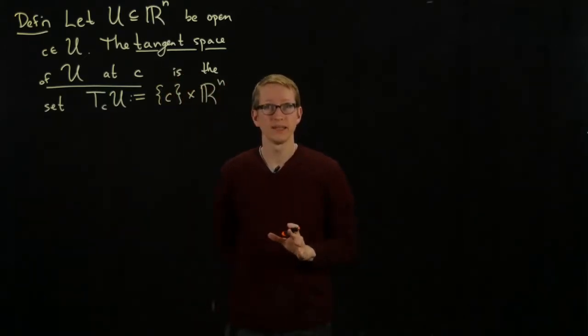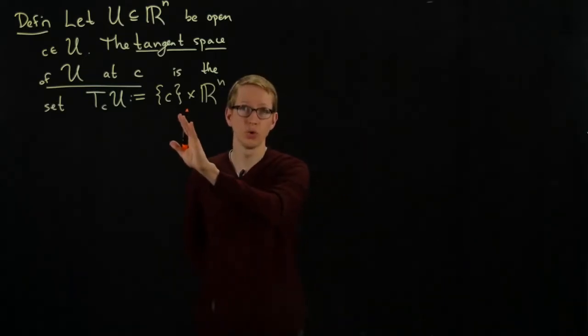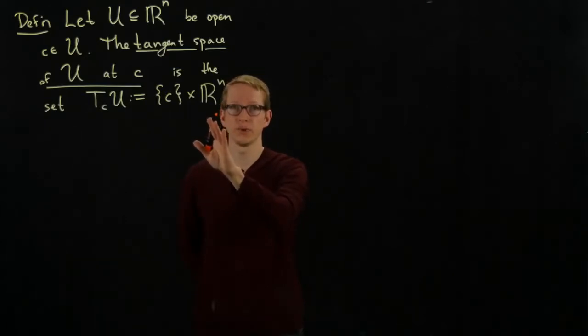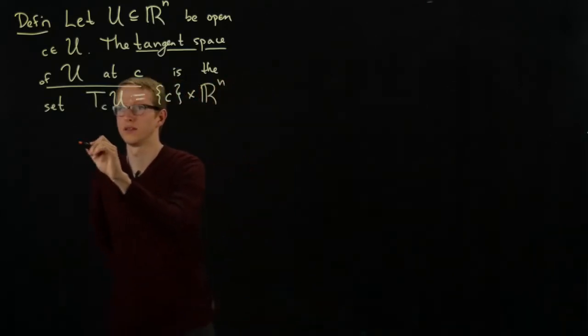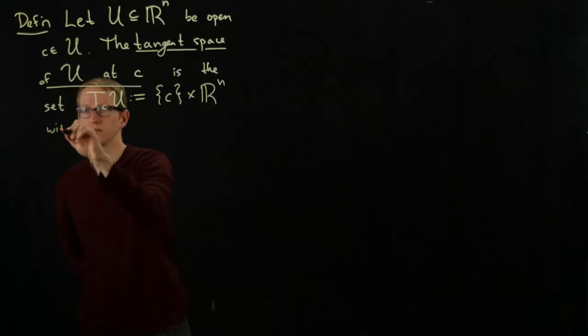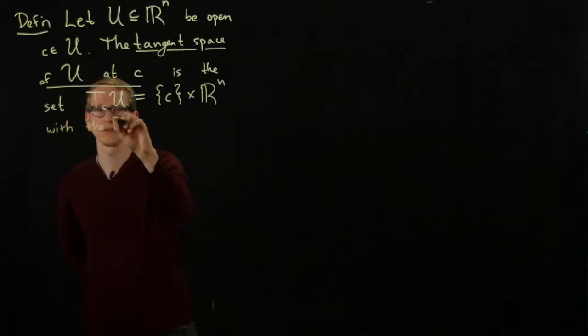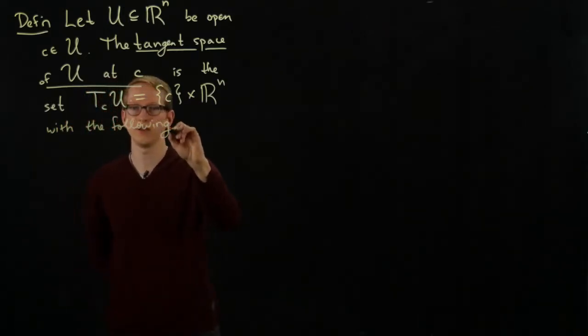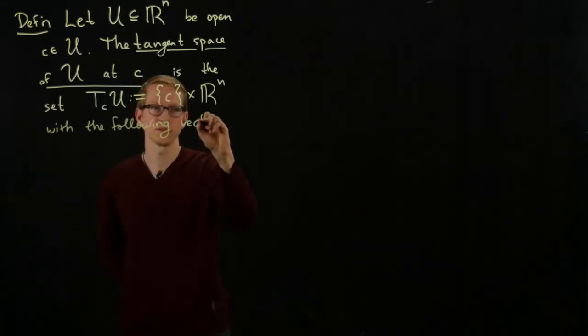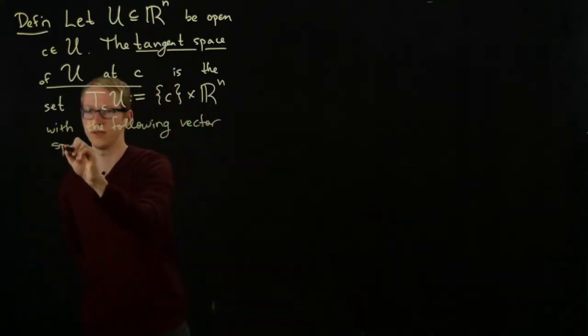But it's also a vector space, and the vector space structure essentially ignores the point c and only uses the vector space structure of Rn. Let me explain what I mean explicitly.